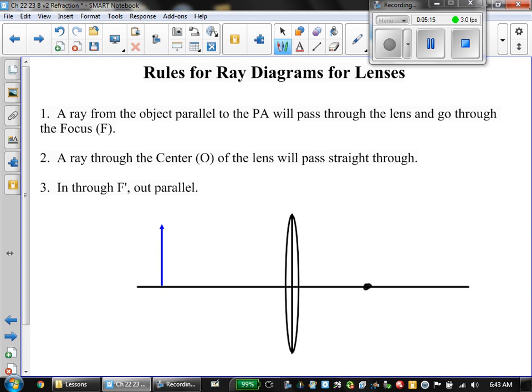And 2F is over here. So we send a light ray in parallel. So we'll go to the top of the object, come to the center, take it down through F. That's the first rule—that's rule one.